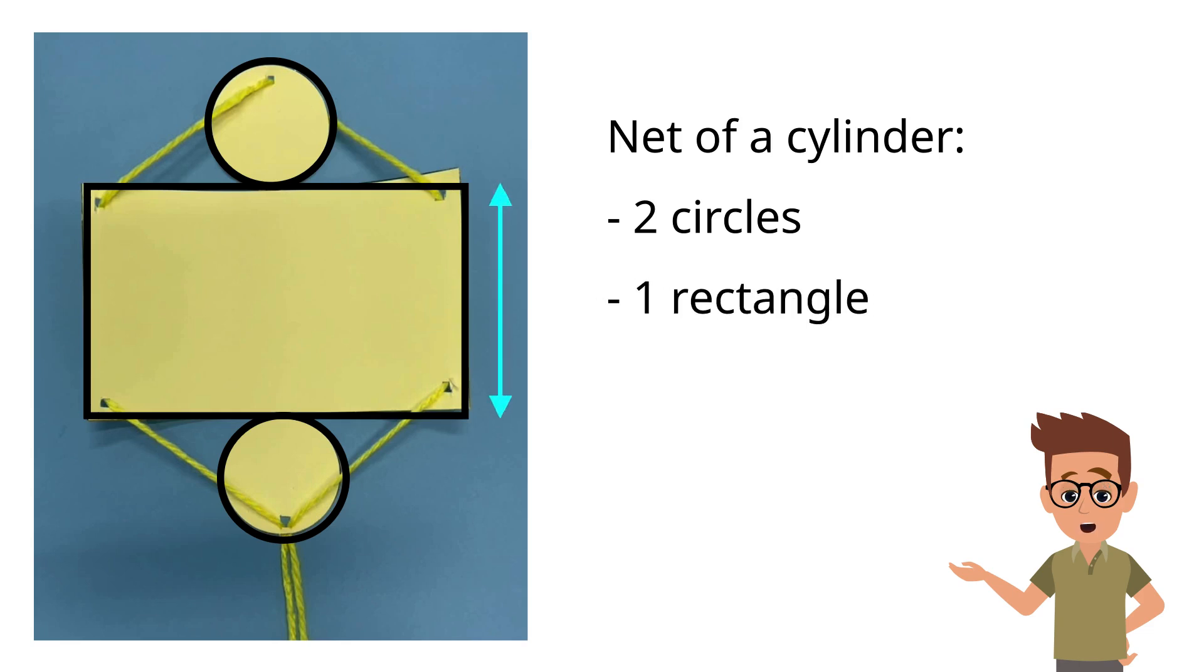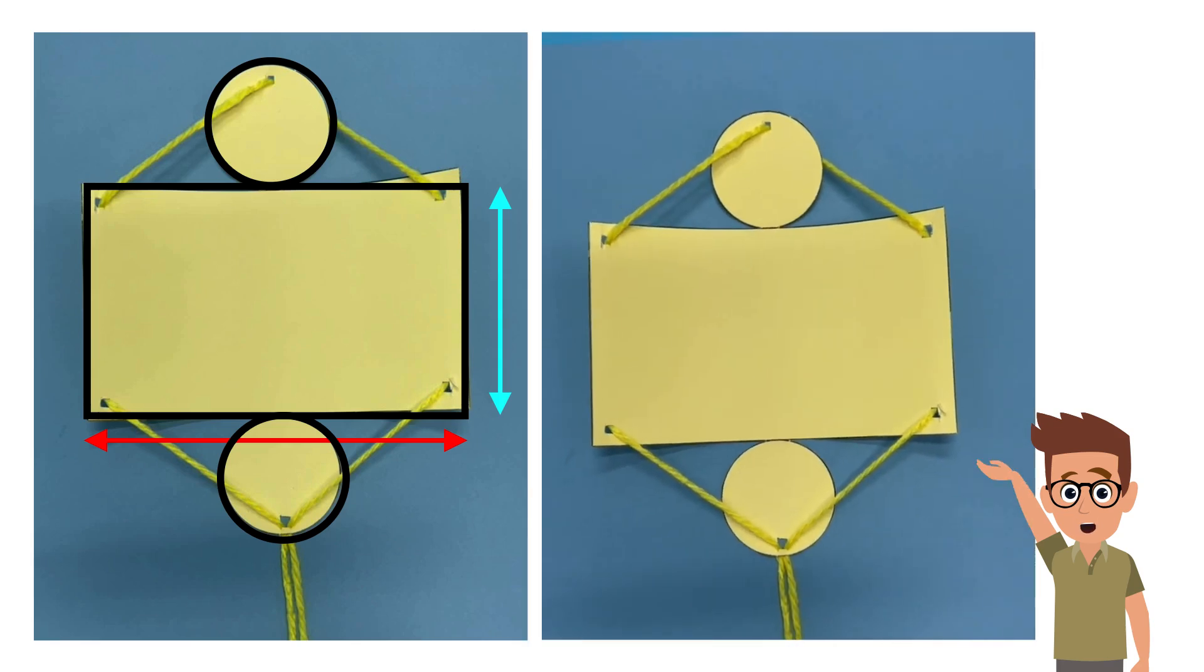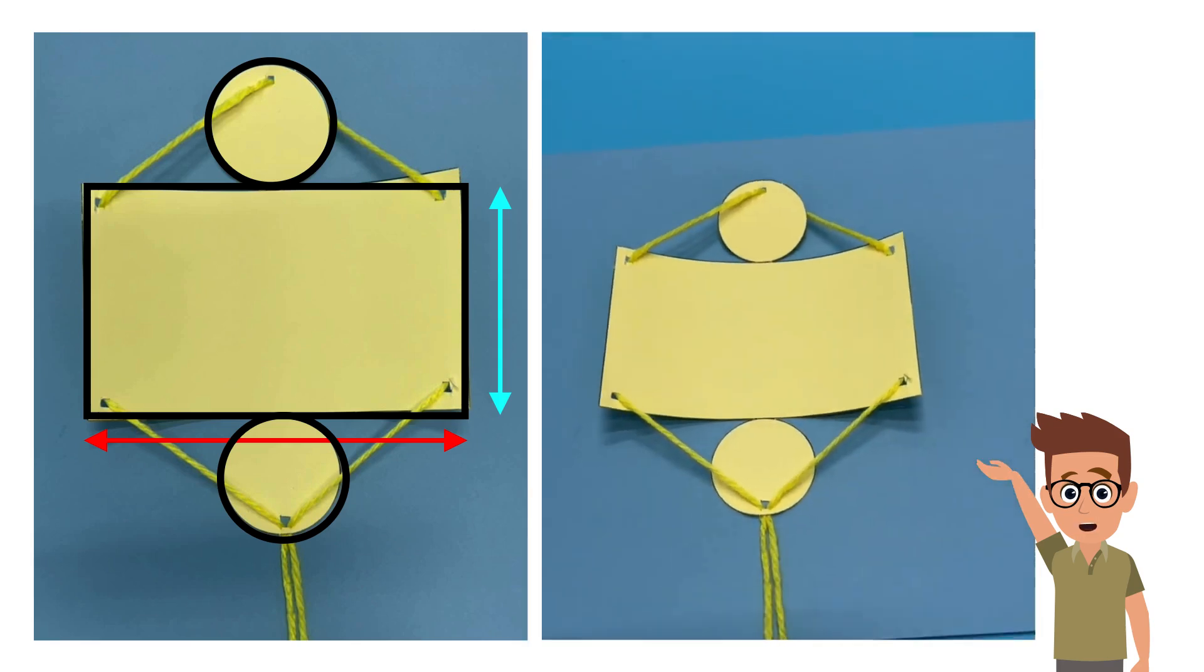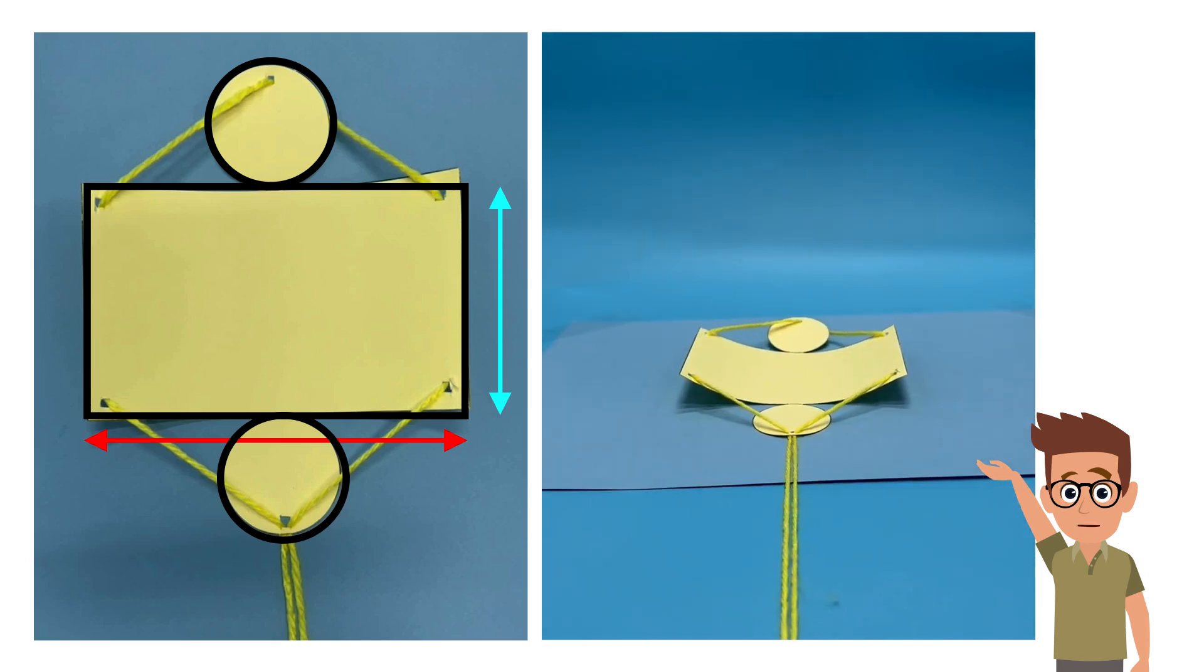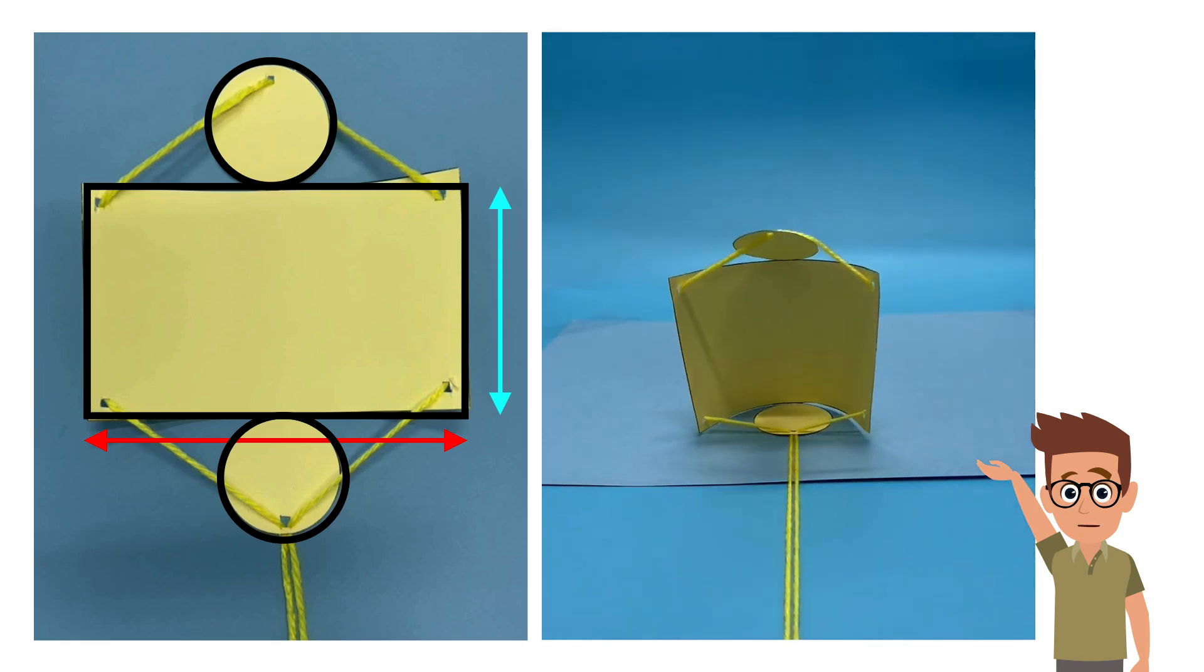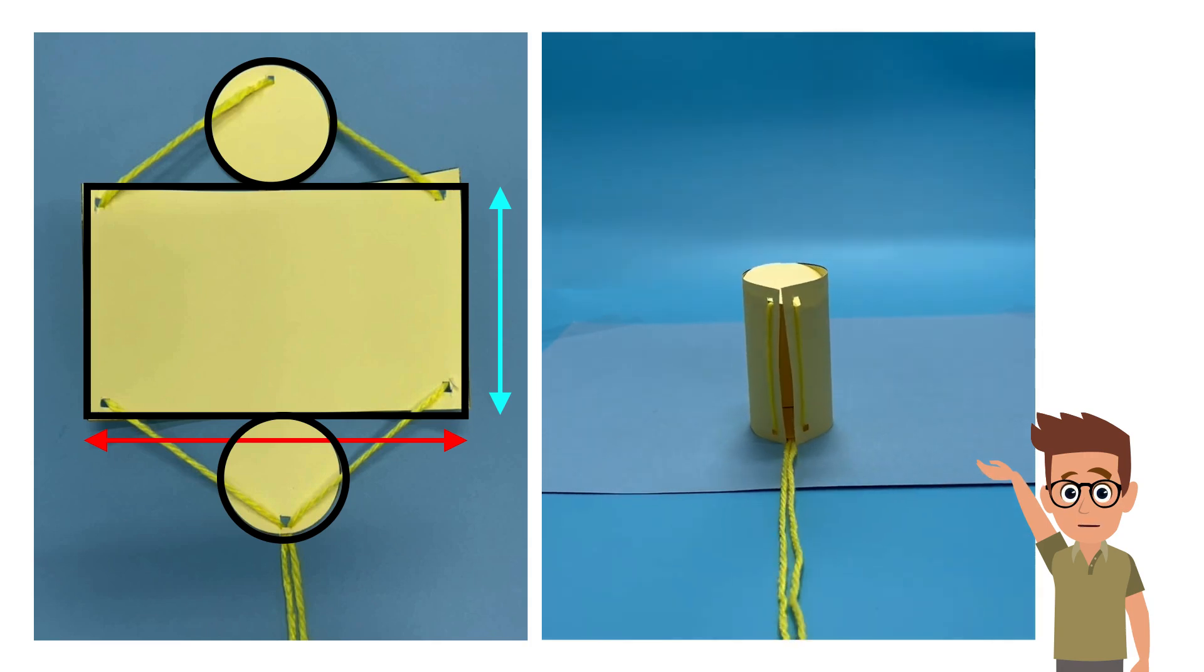What do you think is the breadth and the length of the rectangle? To find out, watch how the net can be folded back into a cylinder carefully. What do you observe about the width and the length of the rectangle? Pause and discuss with your friends.